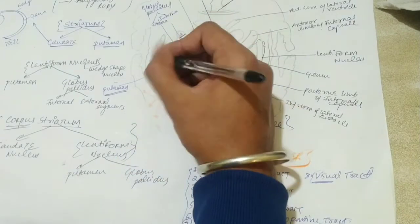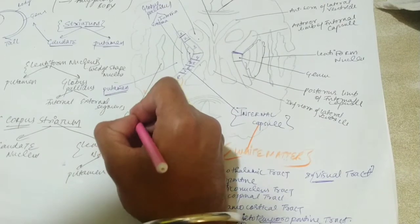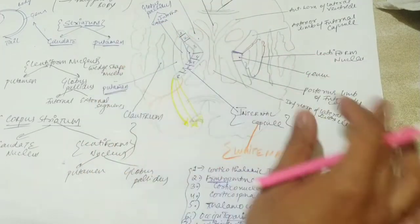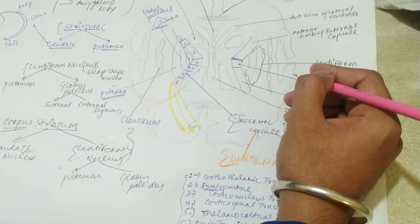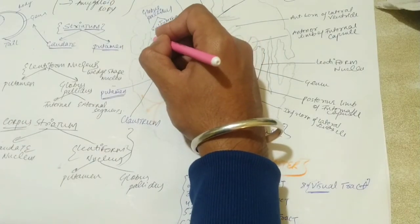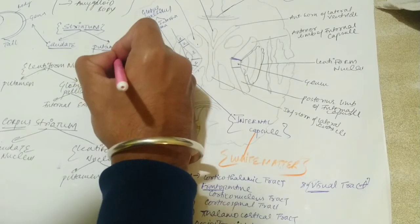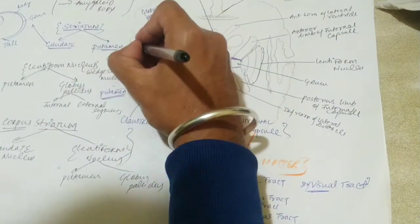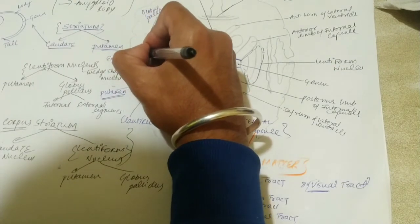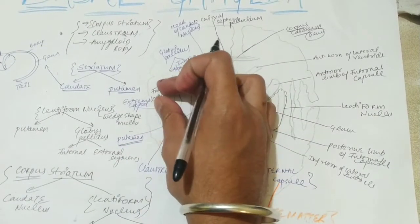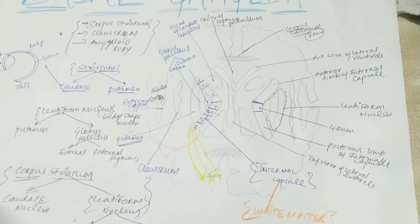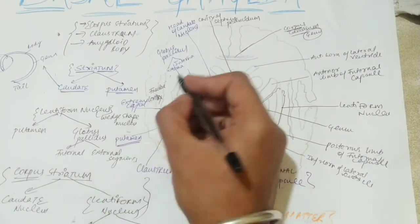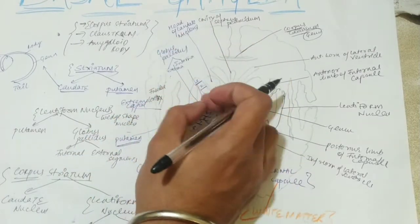This is your putamen and globus pallidus, and this part here is your claustrum. So the claustrum is actually separating your insula from the lentiform nucleus. In between there is your extreme capsule — this part is your extreme capsule. And the outermost region here is your insular cortex. This insular cortex is present under your lateral sulcus, which divides your temporal lobe from your frontal and parietal lobe, and cannot be seen superficially. The extreme capsule is dividing your insular cortex and the claustrum.